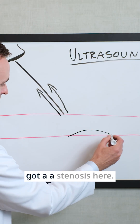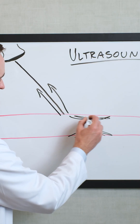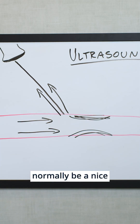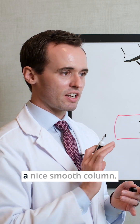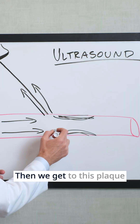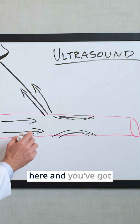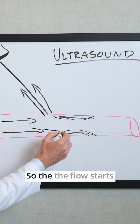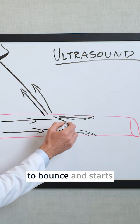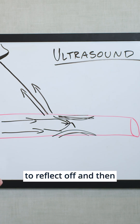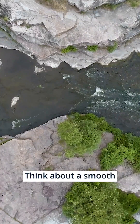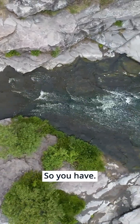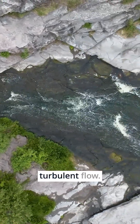So let's say you've got a stenosis forming in the vessel. The blood flow would normally be a nice, what we call a laminar column — flowing in a nice, smooth column. Then we get to this plaque here and you've got these irregular surfaces, so the flow starts to bounce and reflect off, and then we have turbulent flow. Think about a smooth flowing river, and then all of a sudden you've got all these rocks and then you have rapids. So you have laminar flow, then turbulent flow.